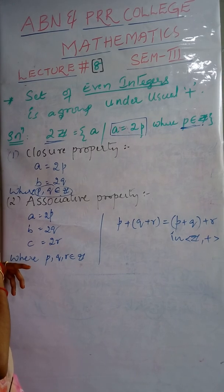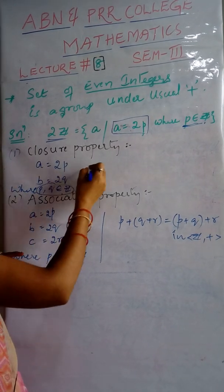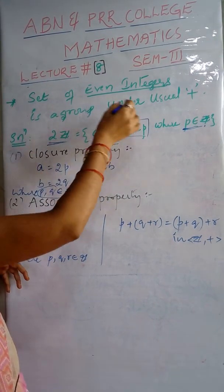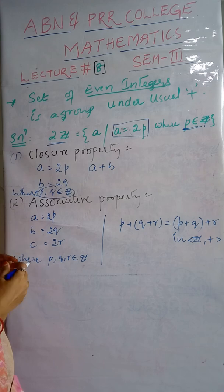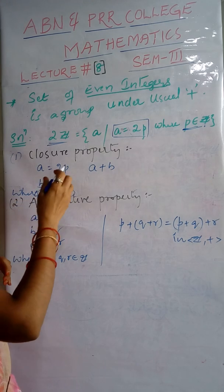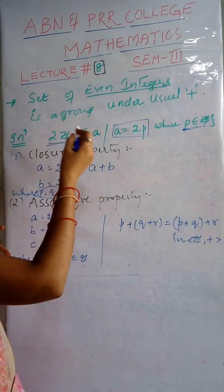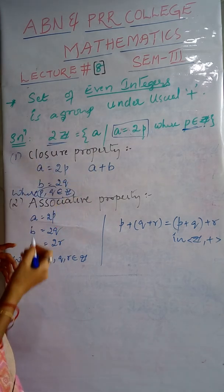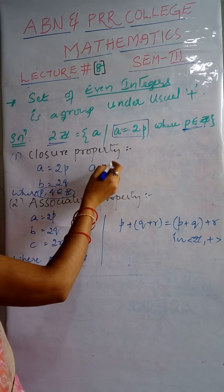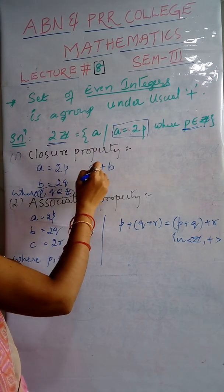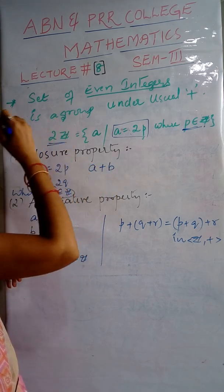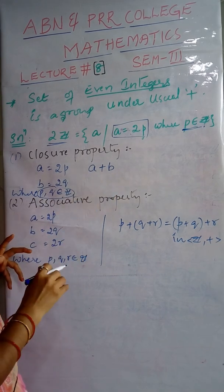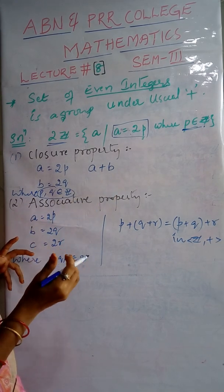Now we have to verify the closure property: under addition, we consider the composite element a+b. Since the composition here is addition, we are considering the composite element as a+b. We want to show that this composite element is in our set — it is enough to prove that a+b is of the form 2 times some integer.